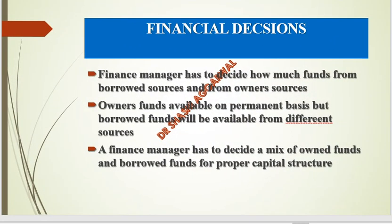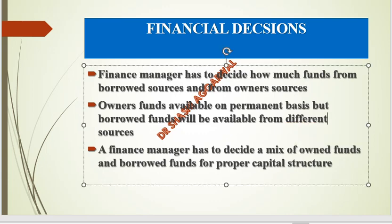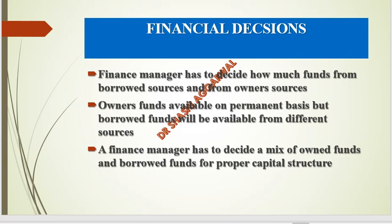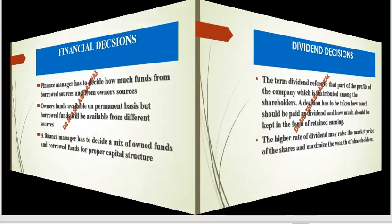The finance manager has to decide how much funds to raise from borrowed sources and how much from owner's funds. Owner's funds are on a permanent basis because there is no repayment liability — we pay dividends. Borrowed funds are available from short-term and long-term sources, and always carry an interest cost that must be paid in every situation. The finance manager must decide how much debt and how much equity to take.